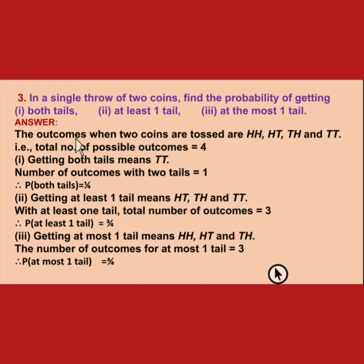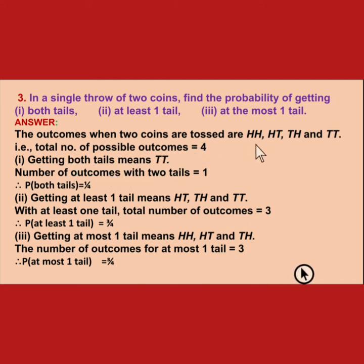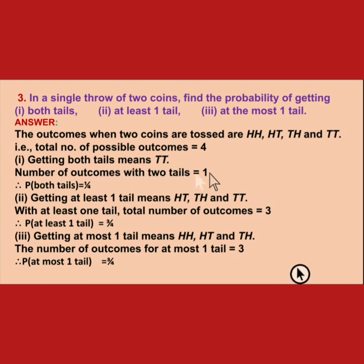Total outcomes when throwing 2 coins are: head-head, tail-tail, head-tail, tail-head — so there are 4 possible outcomes. For getting both tails, there is only 1 outcome (tail-tail), so number of favorable outcomes is 1. Probability of both tails is 1 upon 4.